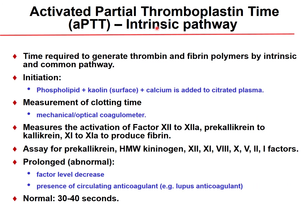The APTT (Activated Partial Thromboplastin Time) measures the intrinsic and common pathways — specifically the time required to generate thrombin and fibrin polymers. It is initiated by adding phospholipid and a contact activator such as kaolin, plus calcium, to citrated plasma. The clotting time is measured by mechanical or optical coagulometer, similar to PT measurement.